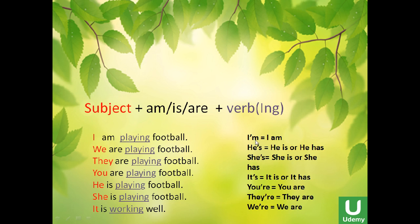Remember the construction: I am is contracted to I'm. He's can mean he is or he has — it depends on the context. For example, he's a good man means he is a good man. But if I say he's three cars, that means he has three cars. So it depends on the context. I prefer you write he is or he has rather than the contraction, but in conversation they usually use these short forms.